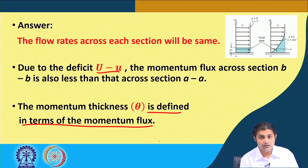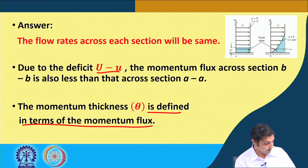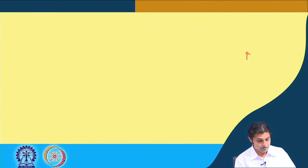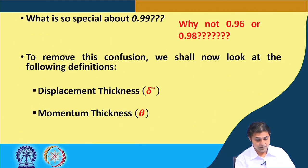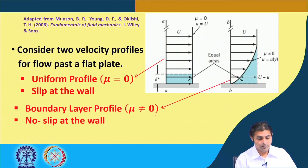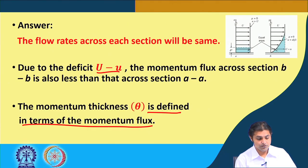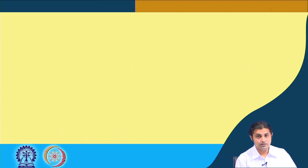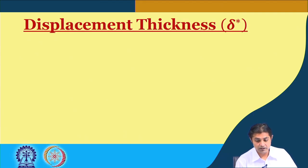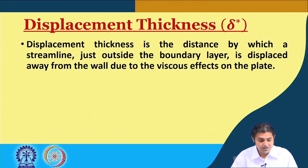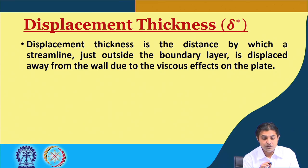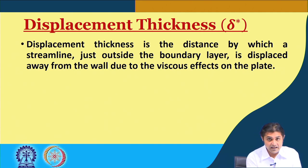The momentum thickness theta is defined in terms of the momentum flux. We saw the boundary layer thickness, the displacement thickness, and what a momentum thickness is. Now we are going to derive the displacement thickness. The definition: displacement thickness is the distance by which a streamline just outside the boundary layer is displaced away from the wall due to viscous effects on the plate.